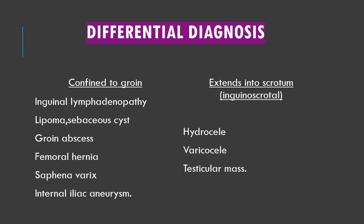The differential diagnosis of inguinal hernia or a mass confined to the groin or extending into the scrotum: if confined to the groin, the most common differentials are inguinal lymphadenopathy, localized lesions like lipoma, sebaceous cysts, and groin abscesses. Rarer differentials include femoral hernia, saphena varix, and aneurysm of the internal iliac artery. If the swelling extends into the scrotum, consider lesions within the scrotum such as hydrocele, varicocele, or testicular mass.